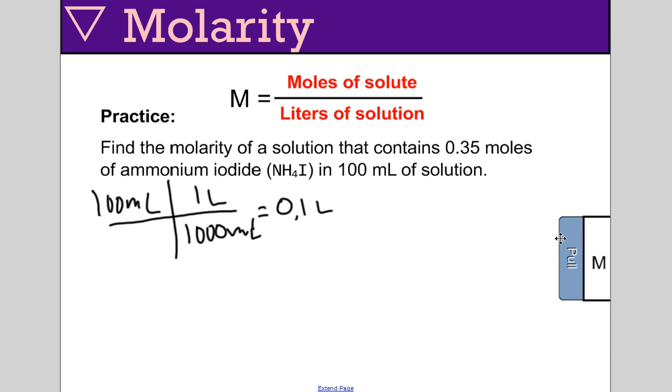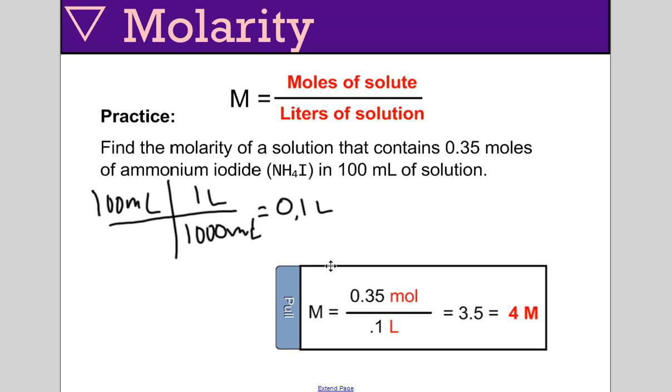When that math takes place, 0.35 divided by 0.1 yields 3.5. Sig figs, though, are still a real issue, so we need to understand this contains one sig fig. Since this is division, that leaves us with one sig fig in our response. So four molar ammonium iodide would be how I would express that.